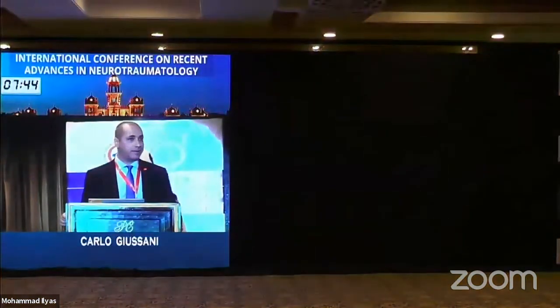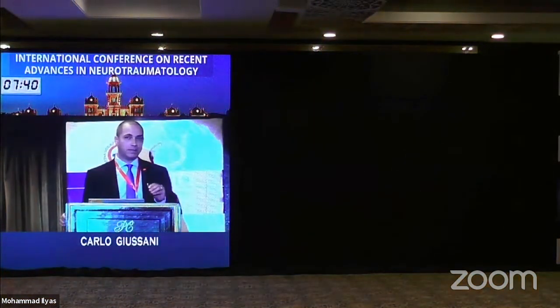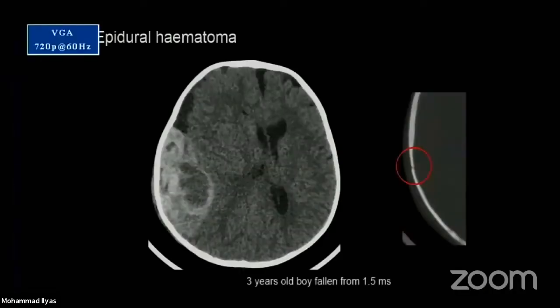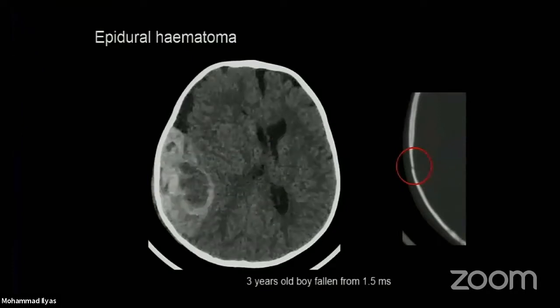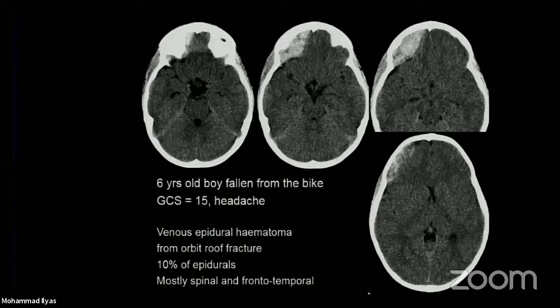Epidural hematoma is, scholastically and orthodoxically, the main event we face. This is for an anatomical reason: the inner table of the skull, at least until age 15-16, is very attached to the dura, so there is a sort of virtual space. What is interesting in kids - like this case of a 6-year-old boy fallen from a bike - they also have venous epidural hematomas.